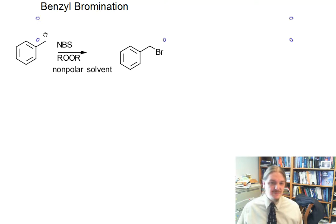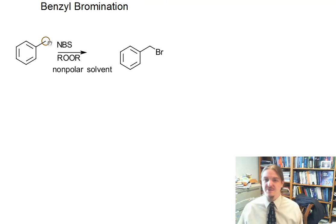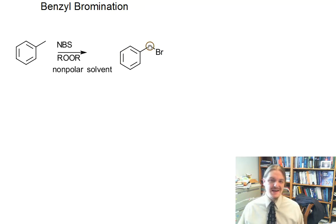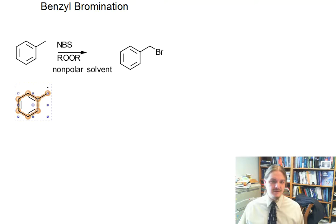When you have the benzyl position — benzyl is the position next to an aromatic ring — and you have some sort of benzyl compound, here's toluene reacting with N-bromosuccinimide in the presence of peroxides. You can get substitution at that benzyl position, and the reason that this works is that you generate a radical.